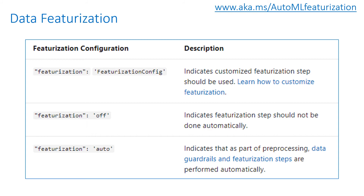Some examples include dropping high cardinality or low variance features, imputing missing values, or generating additional features. You can learn more at aka.ms/AutoMLFeaturization.